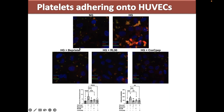This increased adhesion is reversed in the presence of Bepristat, which is a whole-cell PDI inhibitor; in the presence of anti-PDI antibody clone RL90, which doesn't enter cells and therefore inhibits PEC-PDI; and in the presence of CX-XC-PEP, a peptide we developed that also does not enter cells and binds to PEC-PDI. We used different strategies to inhibit PEC-PDI because one is an antibody and the other is a peptide, and each has limitations. In this experiment, the inhibitors were in contact with both platelets and endothelial cells.